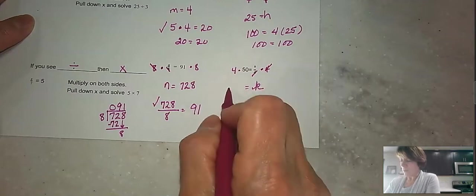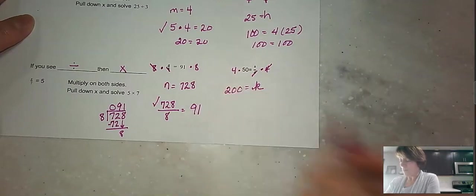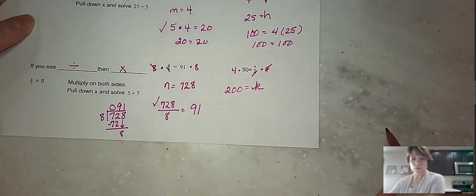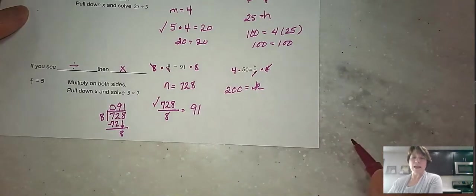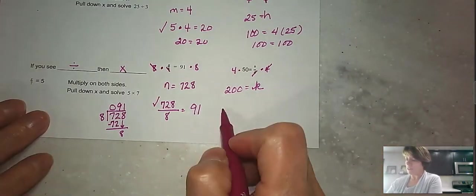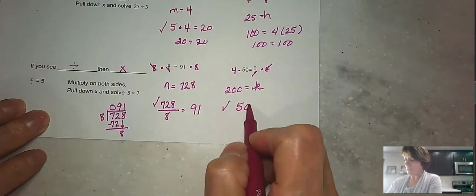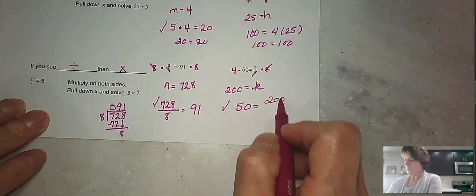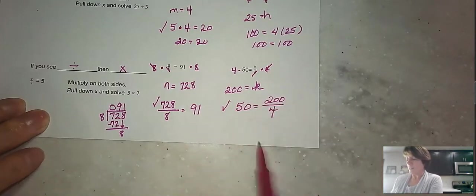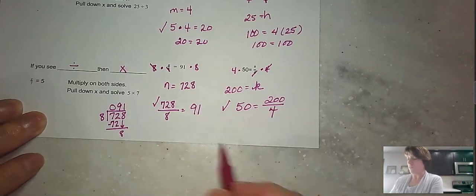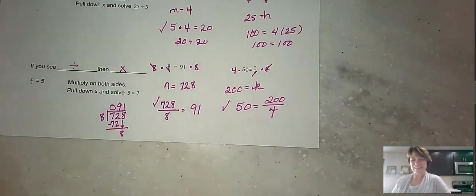And so 4 times 5 is 20. Add my 0 on. 4 times 50 would be 200. And then again, I would go ahead and I would check my answer. So my answer is 50 equal to 200 divided by 4. And so if I divided 4 into 200, I would surely get 50. And so we know that we've done that right.